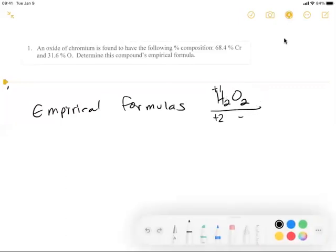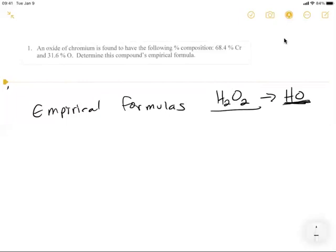Anyway, let's take all that away. So this is hydrogen peroxide. This is not the smallest whole number ratio that this formula could be in. It could be HO. Ho, ho, ho. So this is an example of what an empirical formula is.